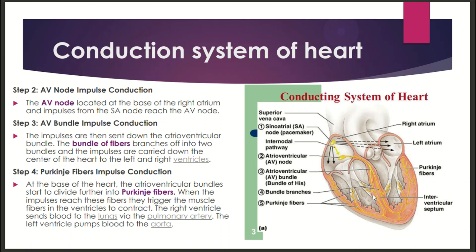Step four: Purkinje fibers impulse conduction. The atrioventricular bundles divide into Purkinje fibers at the base of the heart. The impulse reaches the ventricles through the Purkinje fibers, triggering the muscle fibers.